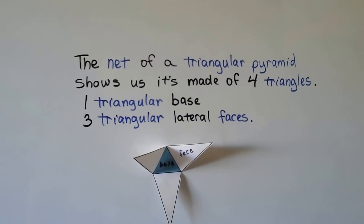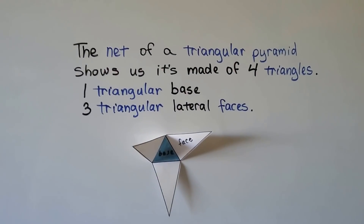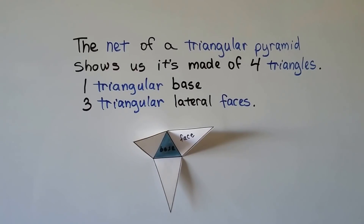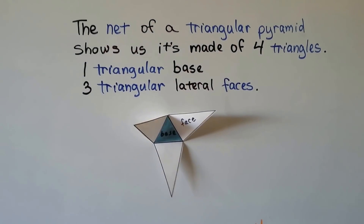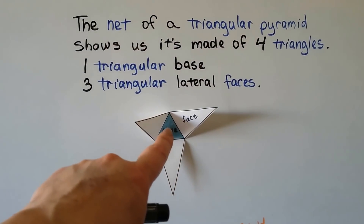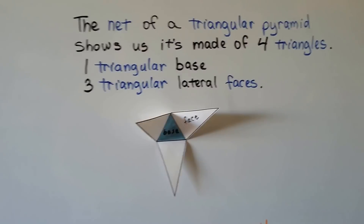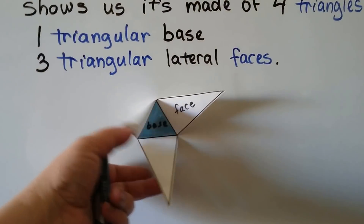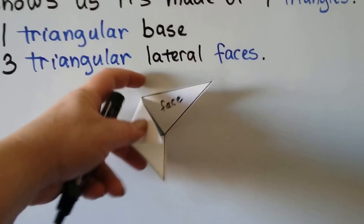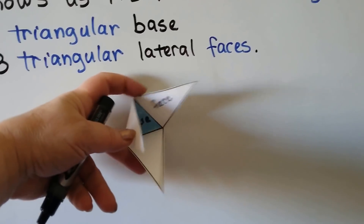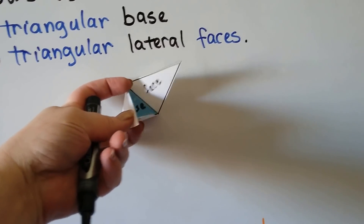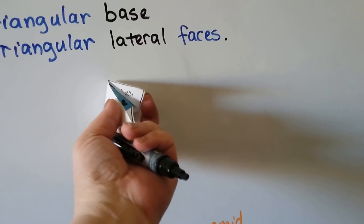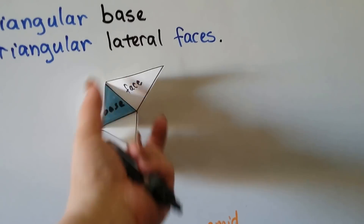The net of a triangular pyramid shows us it's made of four triangles. It's got one triangular base and three triangular lateral faces. So it would fold up like this, and we can make a triangular pyramid. Tape it together.